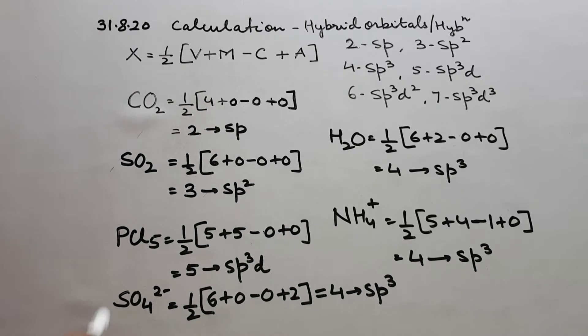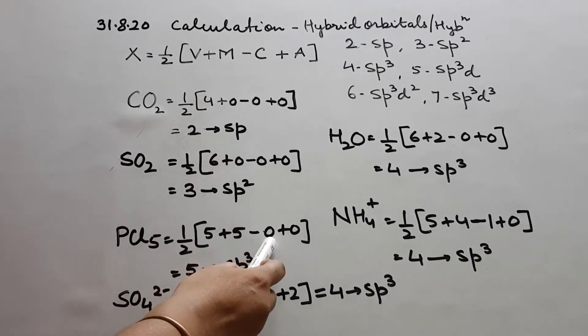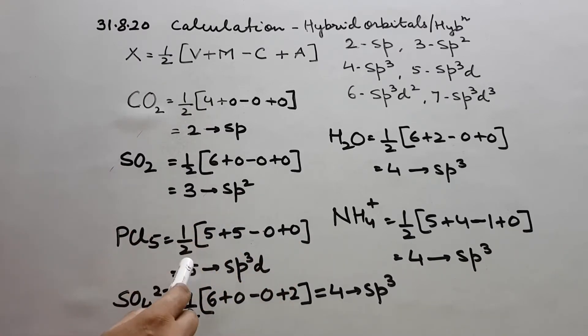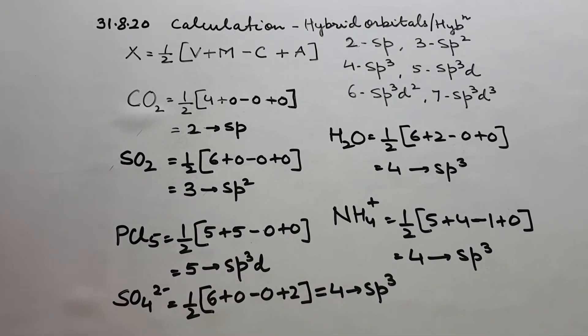Then suppose I have example PCl5. P is the central atom here. We know P has got 5 electrons in the valence shell. And in the neighborhood, it has got 5 monovalent atoms. So there are 5 monovalent atoms attached to this. No cationic charge, no anionic charge. 5 plus 5, 10 by 2, 5. 5 means sp3d.